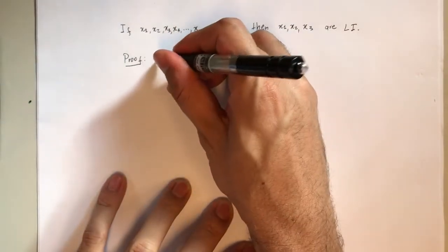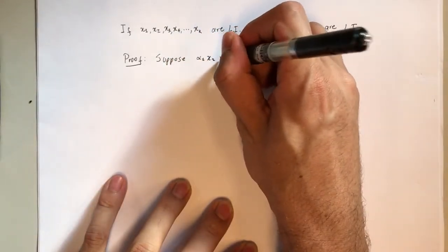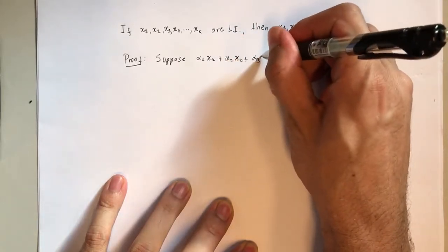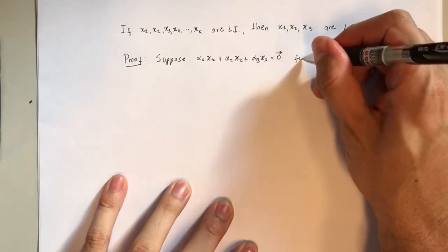which means we suppose alpha1*x1 plus alpha2*x2 plus alpha3*x3 equals the vector 0.